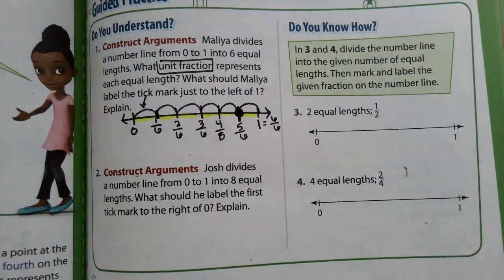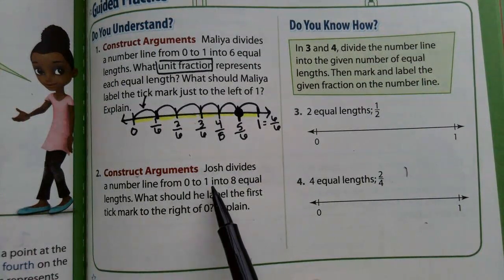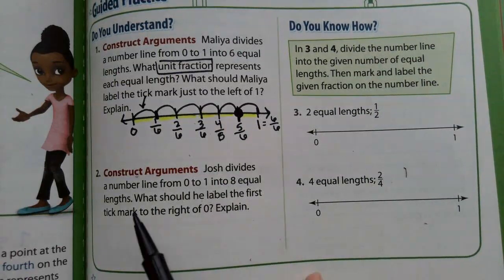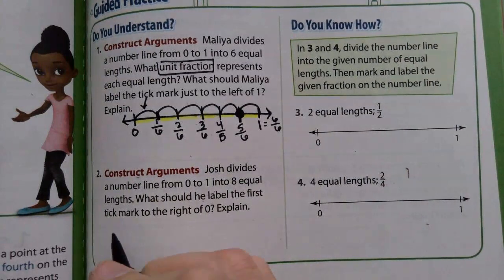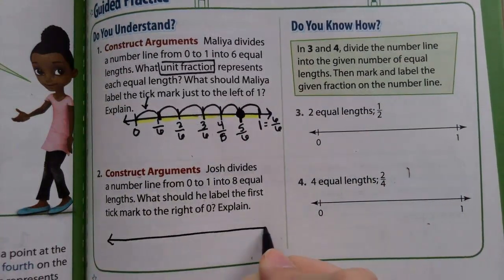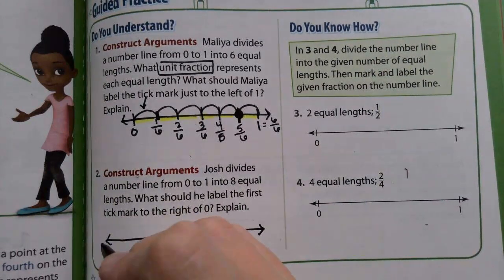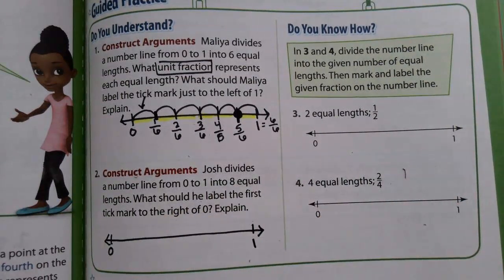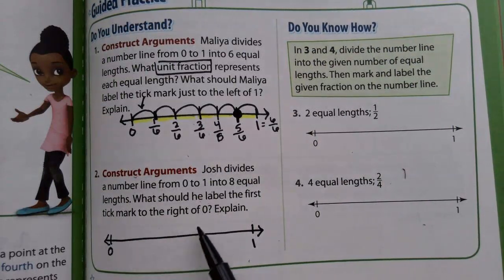Looking at number 2. Josh divides a number line from 0 to 1 into 8 equal lengths. What should he label the first tick mark to the right of 0? Now this one I do want you to write out. So try to draw your straightest line. Draw your 0 and your 1. Now we go through our steps. Step 1, draw your hops. You'll need 8 hops.